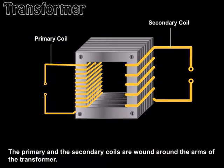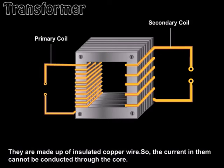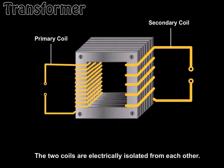The primary and the secondary coils are wound around the arms of the transformer. They are made up of insulated copper wire so that the current in them cannot be conducted through the core. The two coils are electrically isolated from each other.